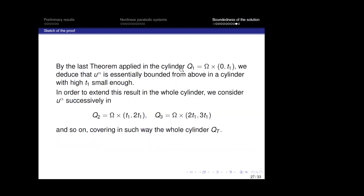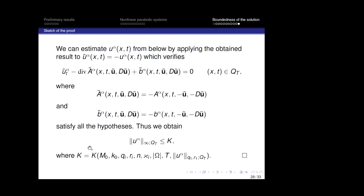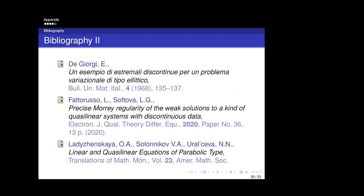Then we consider, step by step, other cylinders: the cylinder Q_2 equal to omega times [T_1, 2T_1], Q_3 equal to omega times [2T_1, 3T_1], and so on. Covering in such a way the whole cylinder Q_T, we prove the boundedness of u_alpha and of u in the cylinder Q_T. Finally, we can estimate the component u_alpha also from below. This is the bibliography, and thanks for your attention.